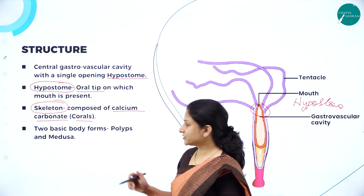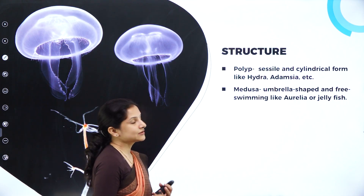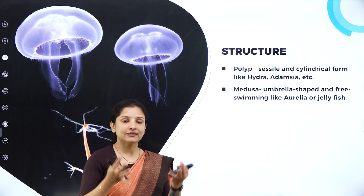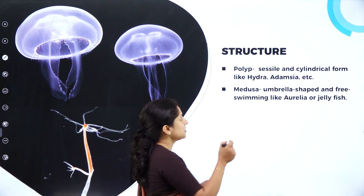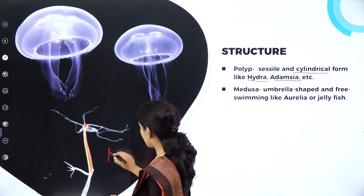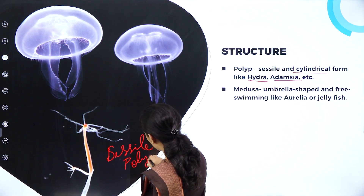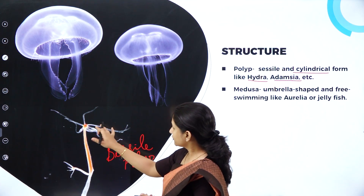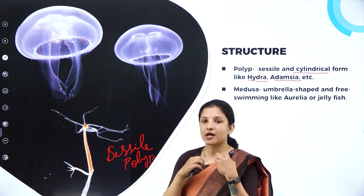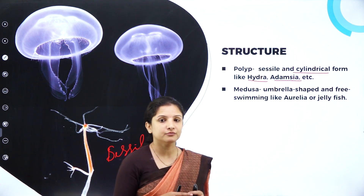They have two basic body forms — polyp and medusa. Polyp form is sessile — they are not capable of moving and stay rooted to a particular substratum. They are cylindrical in shape. Examples include hydra and adamsia. The polyp has a cylindrical, tube-like body, with tentacles and a hypostome. So organisms with a cylindrical sessile body are called polyps.